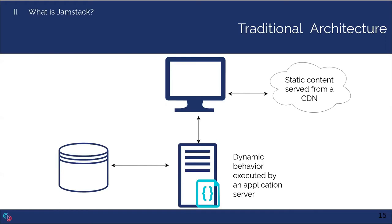Traditionally, a single location houses a web server, an application server, and a database. Dynamic web content is handled by the application server, which generates a just-in-time response to each HTTP request. Dynamic content must be freshly generated every time a client requests it — such as pages requiring login, a frequently-changing sports site, or a site requiring database access like a bank account. The server queries the database and creates an HTML response for the client. Static content like images or CSS files that don't change often may be stored on a CDN.